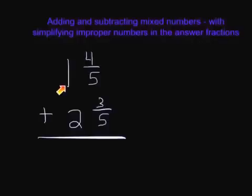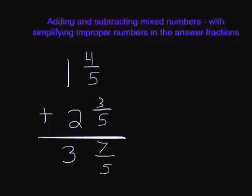We're going to start out by adding our whole numbers. We're going to go 1 plus 2 is 3. And then we're going to write our fifths down here because we know we're going to have a 5 in the denominator, and we're going to add 4 plus 3 which is 7. And if you look at our resulting fractional answer here, we have 7 fifths. So we need to simplify 7 fifths.